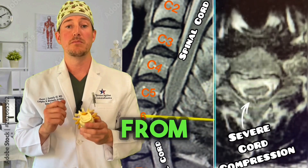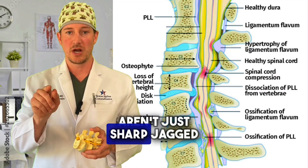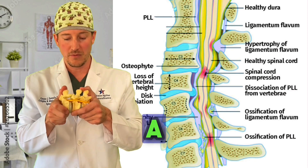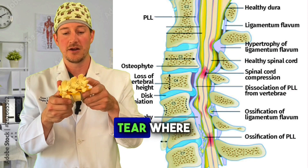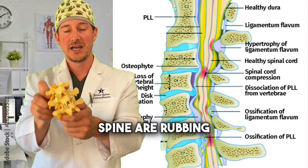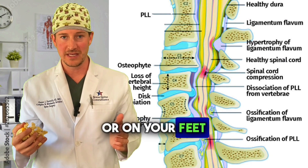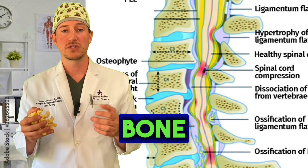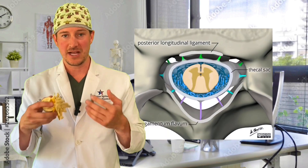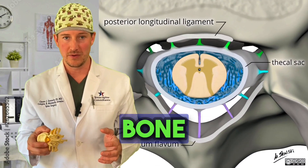Compression could also come from bone spurs — this is the most common cause. These bone spurs aren't just sharp, jagged edges that form all of a sudden; they're from repetitive wear and tear where the joints in the back part of the spine are rubbing. Similar to how you get a callus formation on your hand or feet, a bone spur is almost like a callus — an extra thickening of tissue that hardens and becomes bone.